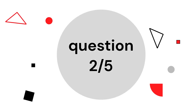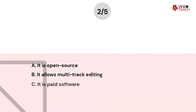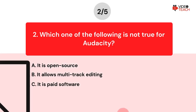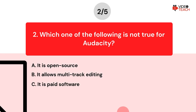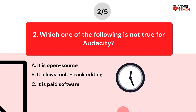Question number two. Which one of the following is not true for Audacity? Option A: It is open source. Option B: It allows multi-track editing. Option C: It is paid software. Now you have about 15 seconds to think about your answer.